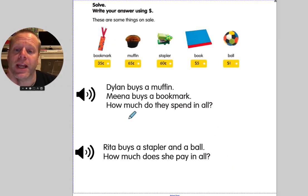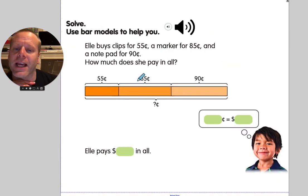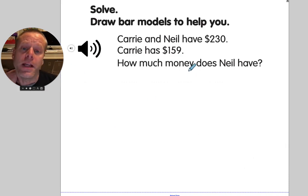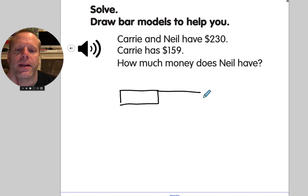So when I give you your problems today, you're going to have to figure out Dylan buys a muffin. Mina buys a bookmark. How much did they spend in all, right? Rita buys a stapler and a ball. How much does she pay in all? These are pretty straightforward, real life kind of problems that you might have to just spend money. Second page here. I have a bar model to help you with this one. Okay. How much does she pay in all? This one gets a little bit tricky, right? If I was to do this bar model, Carrie and Neil have a whole bunch of money together.